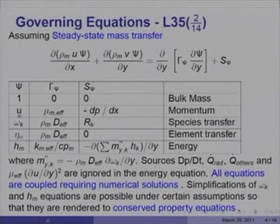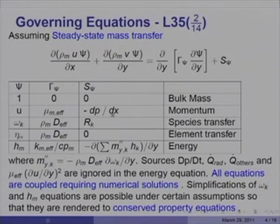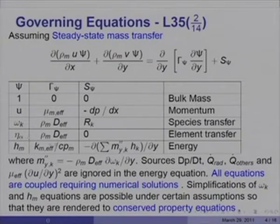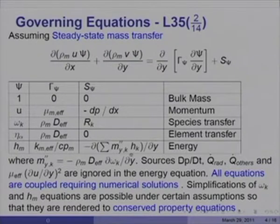If ψ equals u, then γ_ψ would be μ_m effective (assuming turbulent flow) and S_ψ would be minus dp/dx, the pressure gradient. If ψ equals ω_k, then γ_ψ would be ρ_m D_effective and the source would be r_k, giving the species transfer equation. There is also the element transfer equation for which the source is always zero, since element α is a conserved property. H_m is the mixture enthalpy, with a source term comprising mass transfer due to diffusion flux m̈_k y_k. Other sources like dp/dt and q_rad are ignored, as is viscous dissipation.